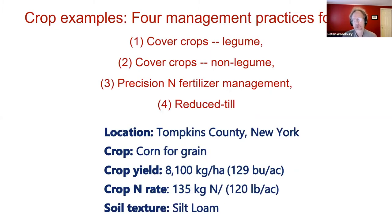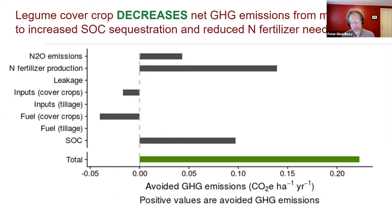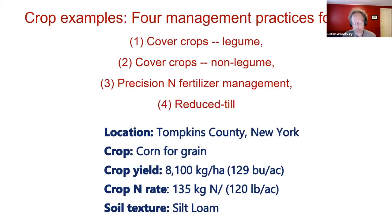I'm going to go through four examples for corn: a legume cover crop, a non-legume cover crop, precision nitrogen fertilizer management, and reduced tillage. All of these examples will be for Tompkins County, where the live portion of this meeting is taking place today. This is all corn for grain.